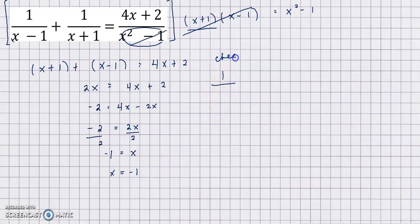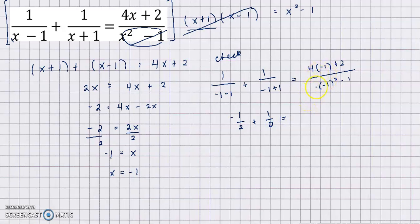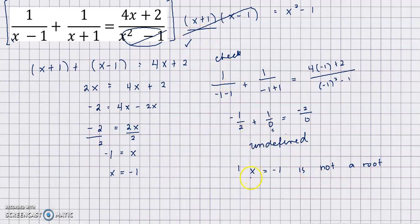Checking x equals negative 1: substituting gives 1 over (negative 1 minus 1) plus 1 over (negative 1 plus 1) equals (4 times negative 1 plus 2) over (negative 1 squared minus 1). This becomes negative 1 half plus 1 over 0, and on the right side negative 4 plus 2 equals negative 2 over 0. Both sides are undefined. Since we cannot have 0 as a denominator, x equals negative 1 is not a root — this equation has no root, which is a false statement.